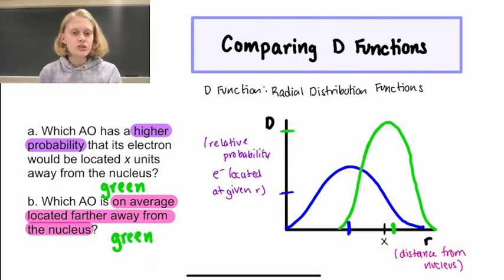So just to recap what we discussed: when you want to compare probabilities, you compare along the vertical axis, and when you want to compare distances, you compare along the horizontal axis. I hope this video was helpful. Thanks for watching.